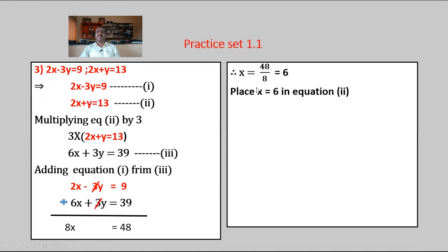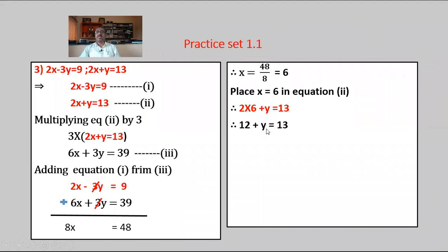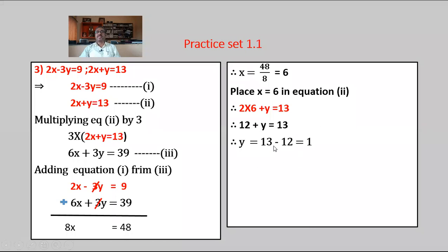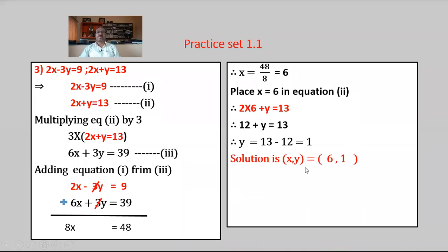Substitute x equals 6 in equation 2: 2x plus y equals 13. So 2 times 6 plus y equals 13, giving 12 plus y equals 13. Moving 12 to the RHS: y equals 13 minus 12 equals 1. Hence the solution of the given simultaneous equation is x equals 6 and y equals 1.